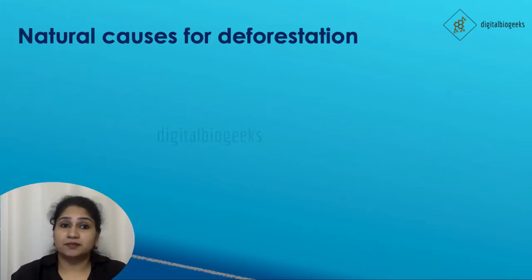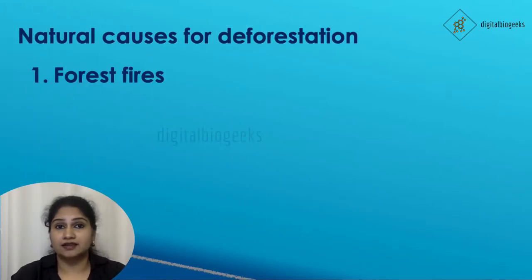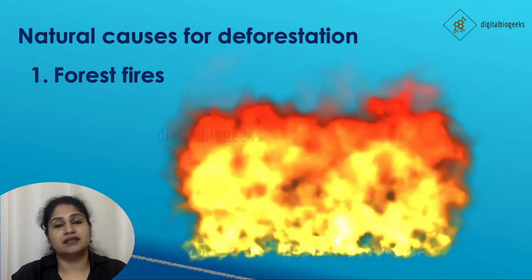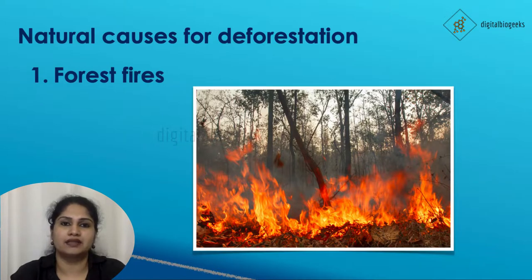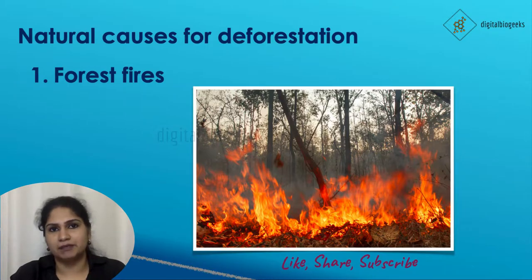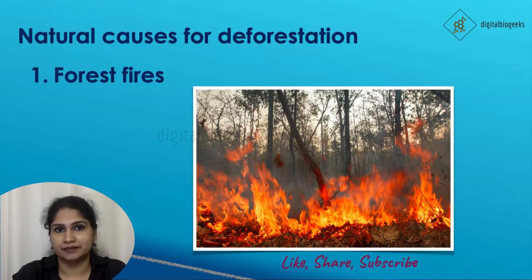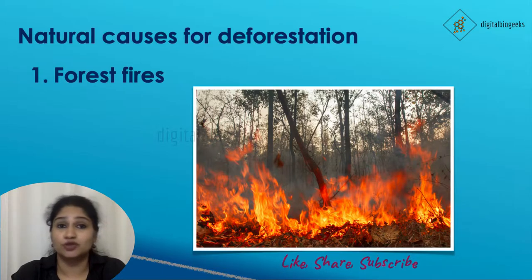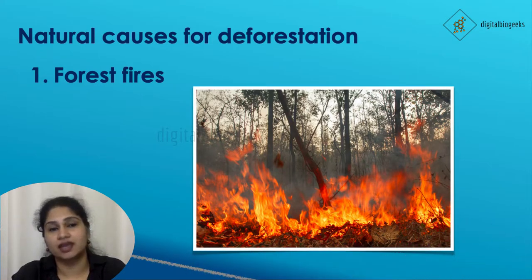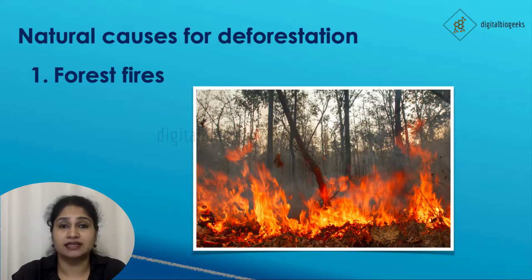There are also natural causes for deforestation, like forest fires. Forest fires are uncontrollable fires often happening in wildland areas. The causes can be man-made or natural. Natural forest fires happen due to lightning, and sometimes due to the sudden combustion of dry leaves in extreme summer. But most of the time forest fires are caused by the carelessness of people — like campfires left unattended, negligently discarded cigarettes, and burning of debris.